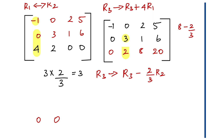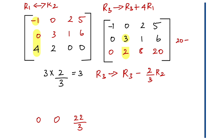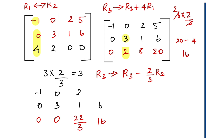8 minus (2/3) times 6 into 2: 3 into 2 is 6, 2 into 2 is 4. So 20 minus 4 equals 16. This element is 16. The other elements are: 0, 3, 1, 6 and minus 1, 0, 2, 5.